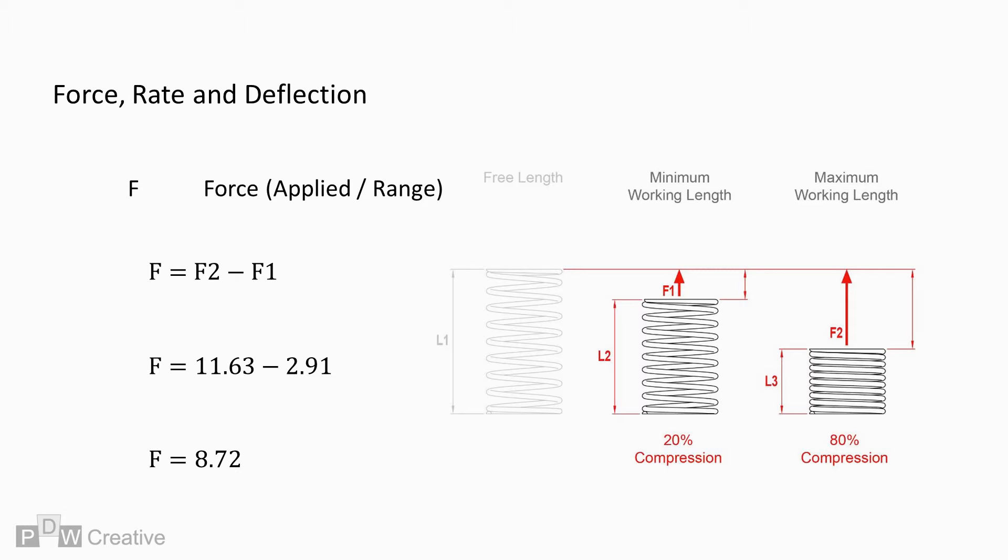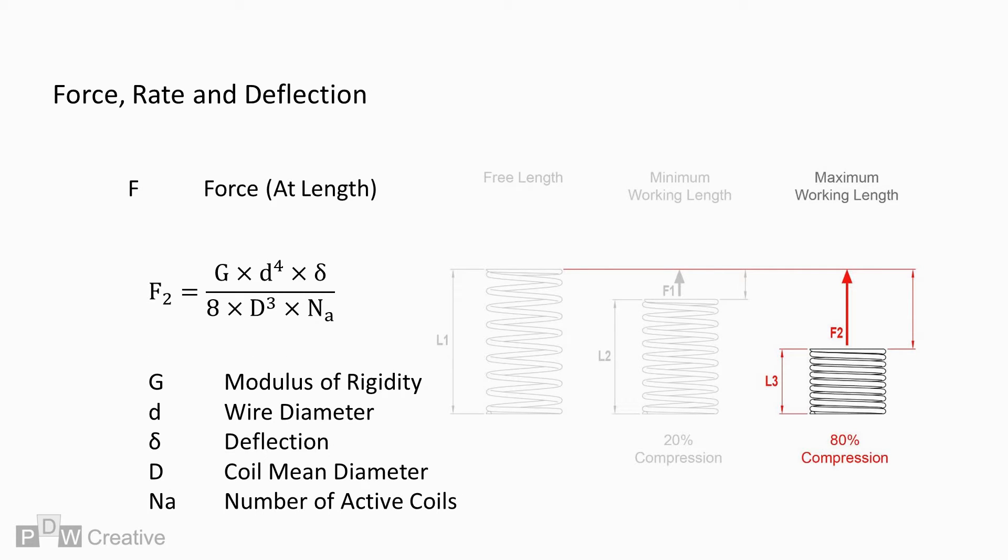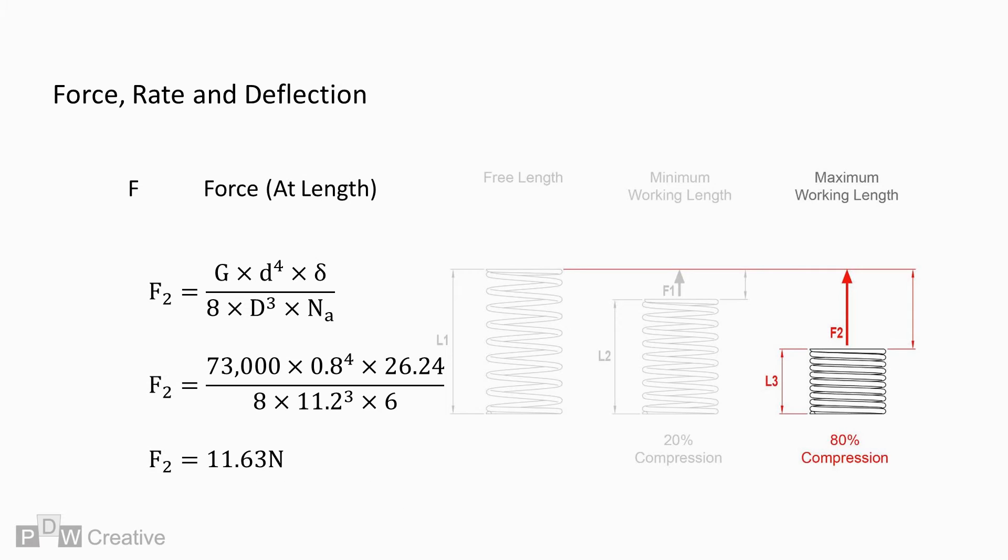It's likely we will know the forces we want the compression spring to transmit. But let's say we don't know. If we take F2, for example, we can calculate by the modulus of rigidity times wire diameter to the power of 4 times deflection over 8 times mean diameter to the power of 3 times the number of active coils. If we input our variables, we come back to a force of 11.63 N.